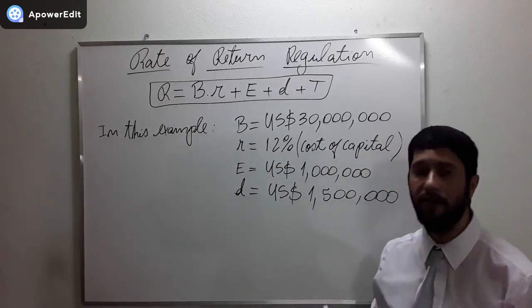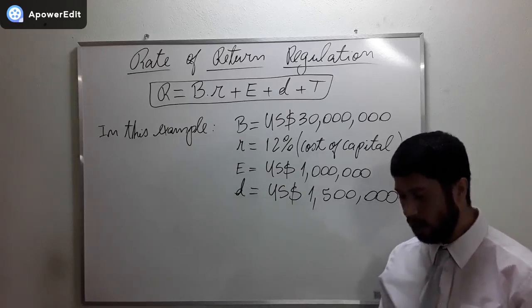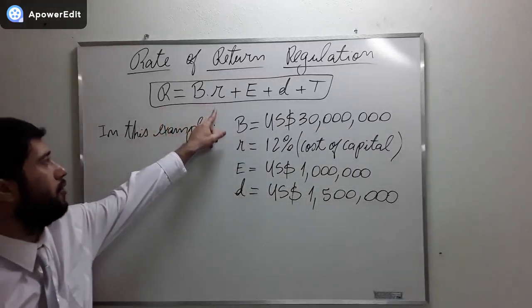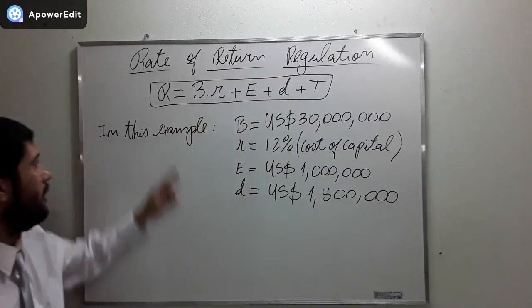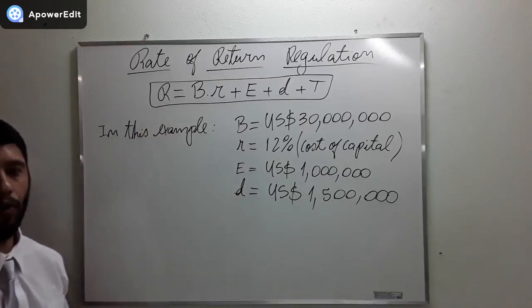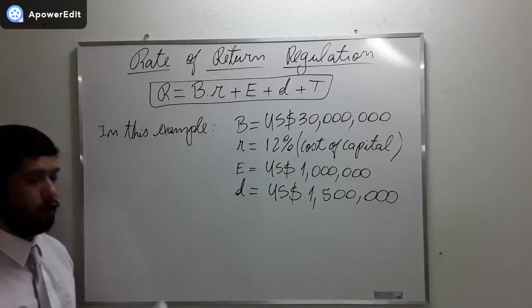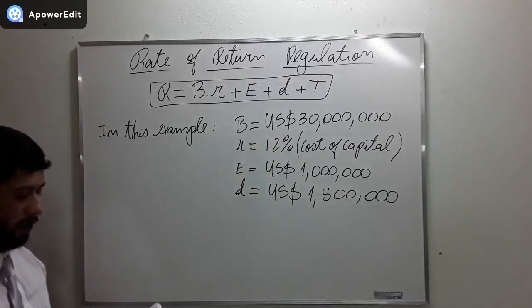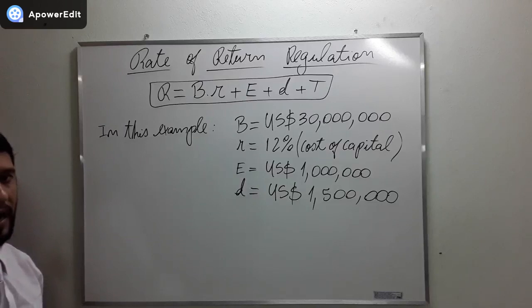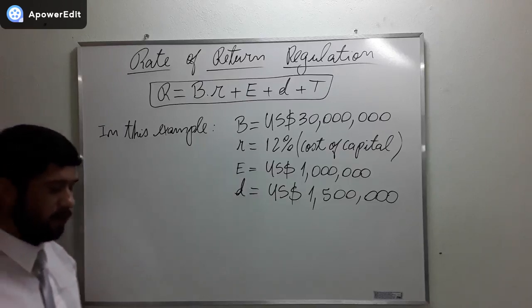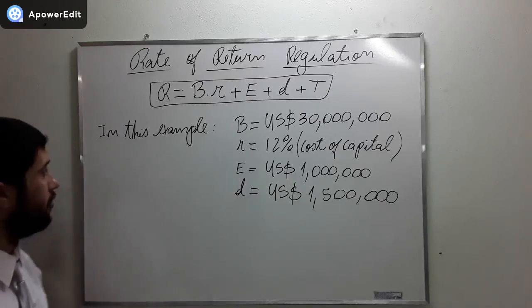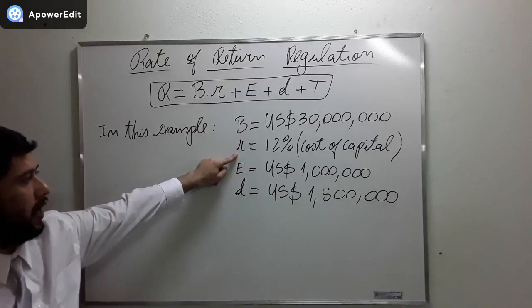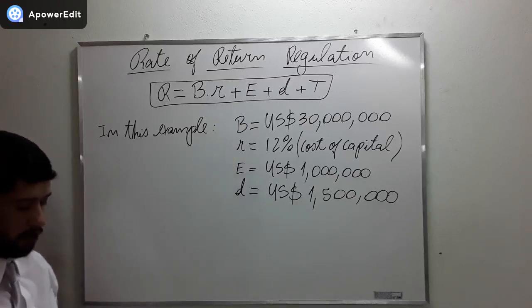Then the exercise asks us to calculate the revenue requirement. But before calculating the revenue requirement, let's understand the formula. The formula is R equals B times r plus E plus D plus T. Capital R is what we want to calculate. B is the rate base, which is $30 million USD, the amount of capital or assets the utility dedicates to providing its regulated services.